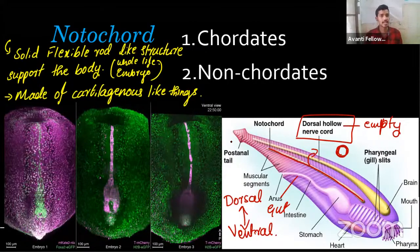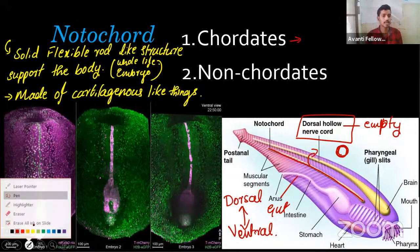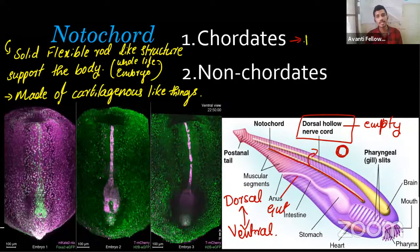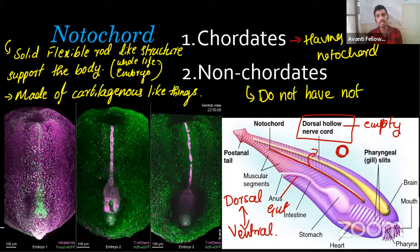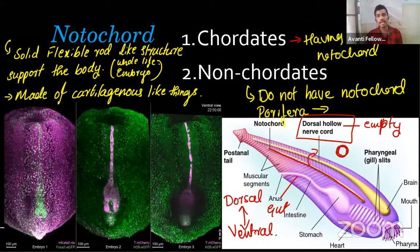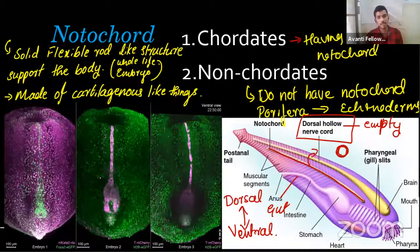Animals having a notochord are called chordates. Non-chordates do not have any notochord in any form of their life. For non-chordate examples, you can go from Porifera to the echinoderms — none of them have the notochord.